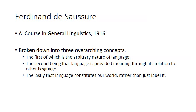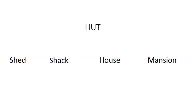Language doesn't just name our ideas — it constitutes what our world means to us. So if we want to look at our first point, the arbitrary nature of language, and go back to our example of these five words, we can begin to see that the words themselves have no inherent meaning to the concepts they're trying to conceptualize.